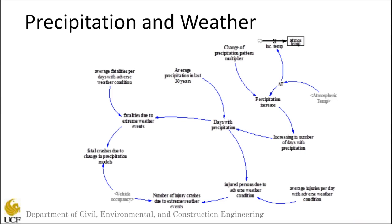The next model is the precipitation and weather sub-model, where we attempt to estimate the number of days with extreme weather events up to the year 2100 based on the climate change model. The climate change model allows us to estimate the increase in the number of days with extreme weather conditions, which will impact road safety.